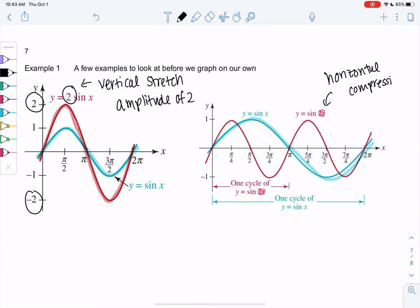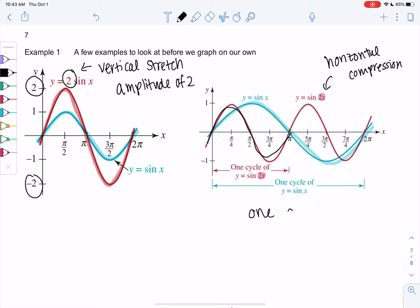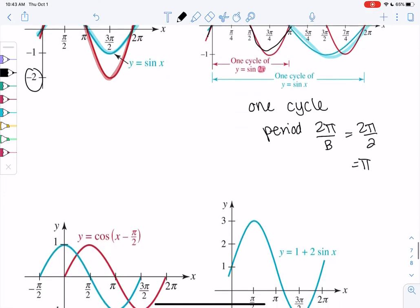So it's basically going to, it's like you take it and you smash it a little. So you can see it does a cycle faster. So imagine taking that blue one and then like pressing it together to make it grow faster. So one cycle, or the period, is 2 pi over b, which is 2 pi over 2, or pi. So it's just happening twice as fast. It completes a cycle within pi. Let's look at the others.